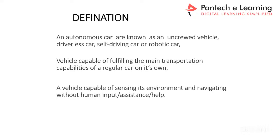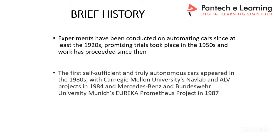A purely driverless car means it should be able to drive itself without any human help. It should have all the capabilities of a human — whatever a human can sense, like obstacles, pathfinding, or predicting certain things, taking a turn, knowing how fast to go on a particular terrain. That is what an autonomous vehicle needs to be able to do.